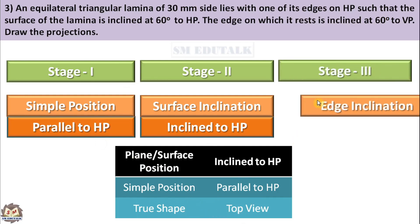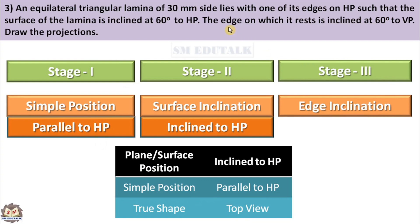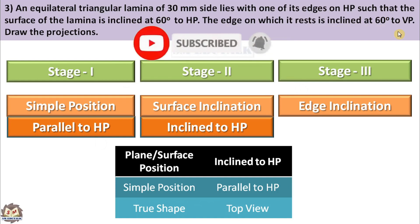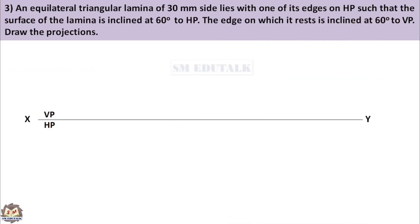In stage 3, the edge of the lamina should be inclined to the specified reference plane. It is given that the edge on which it rests is inclined at 60 degrees to VP. You know that the true shape should be drawn first, so you have to draw the top view first, followed by front view. Now you know that top view is a triangle. But in what orientation should the top view be drawn? There are many orientations — I will explain one by one.